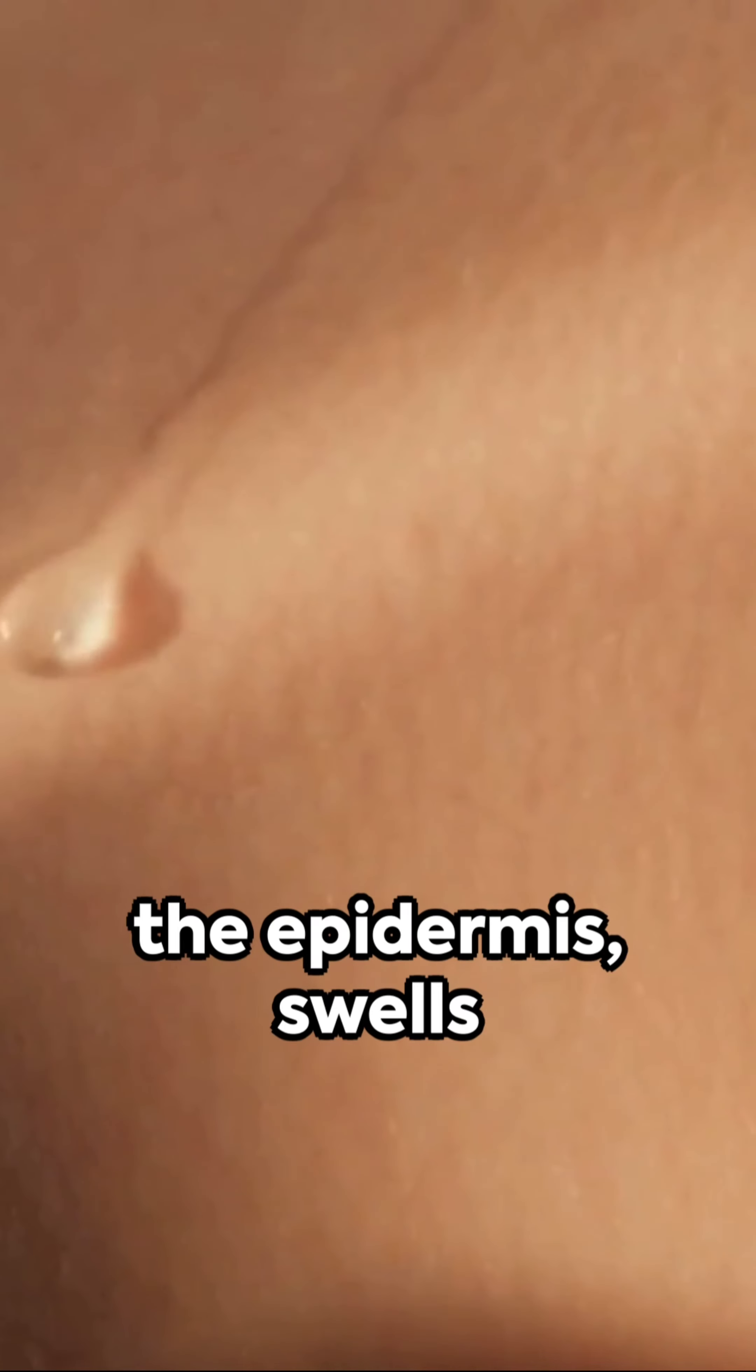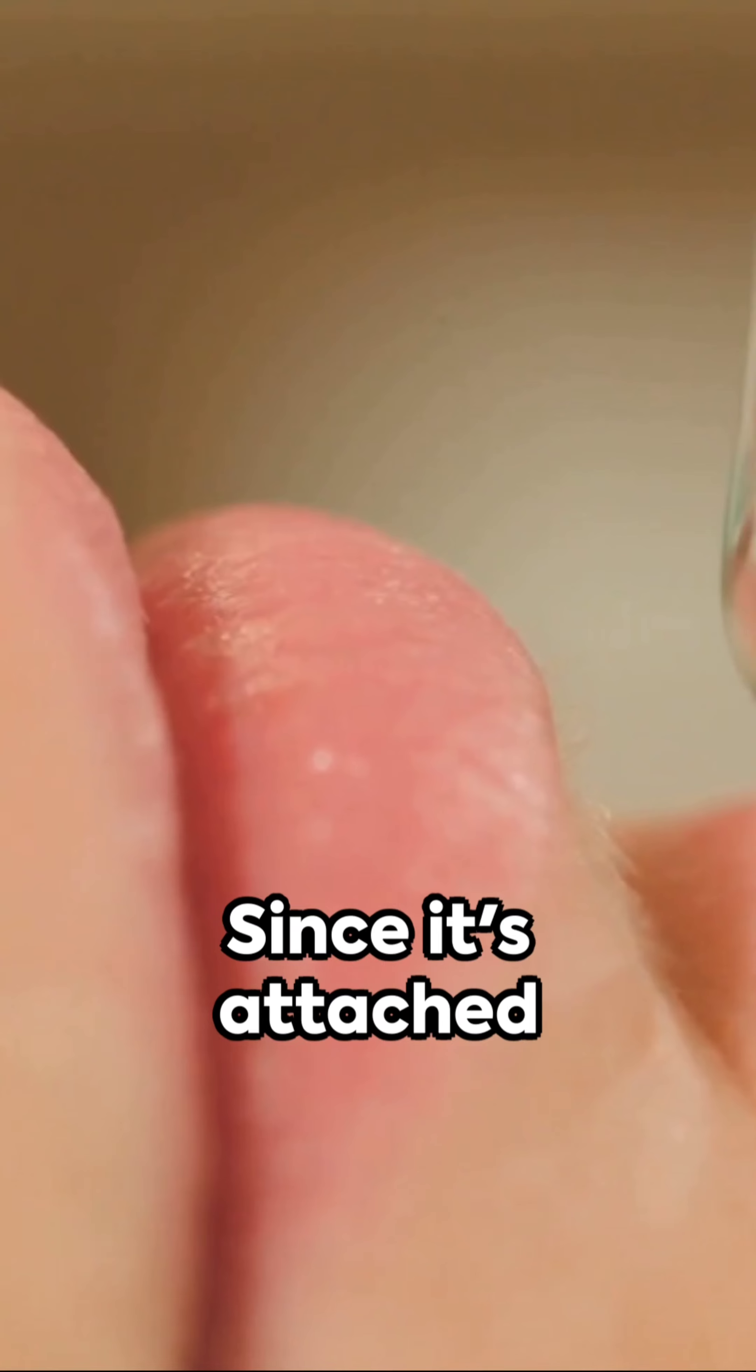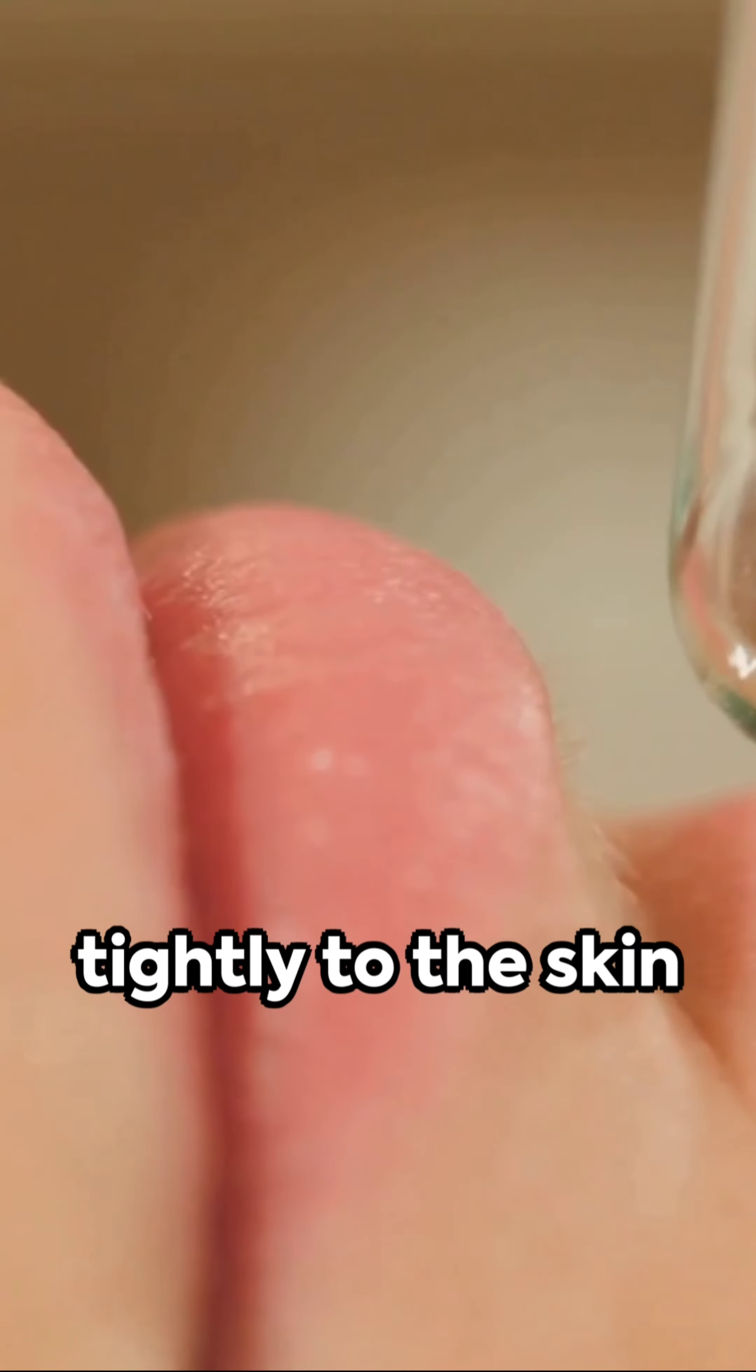The outermost layer, the epidermis, swells when it absorbs water. Since it's attached tightly to the skin underneath, it compensates for the increased area by wrinkling.